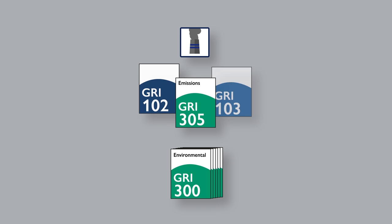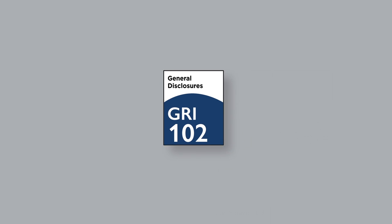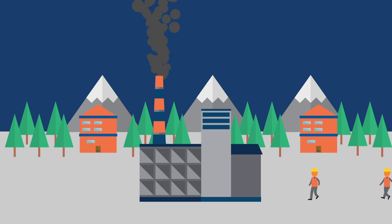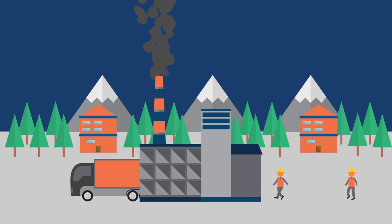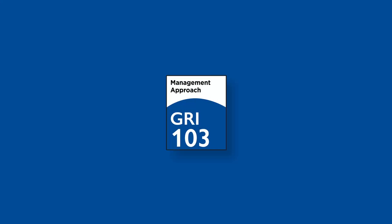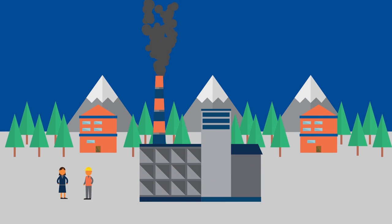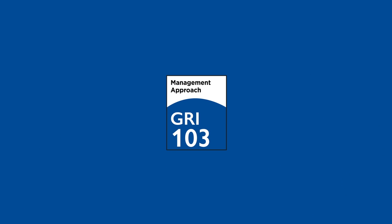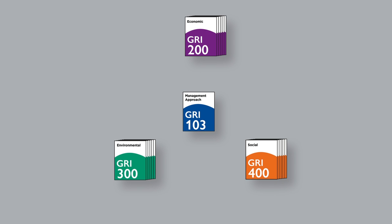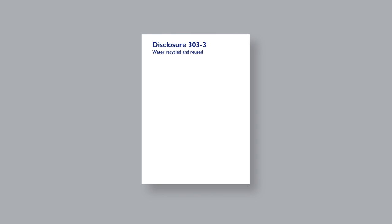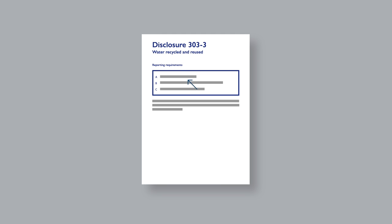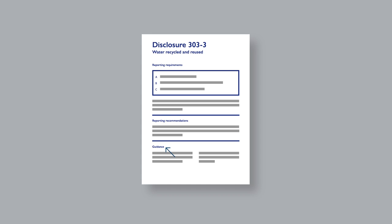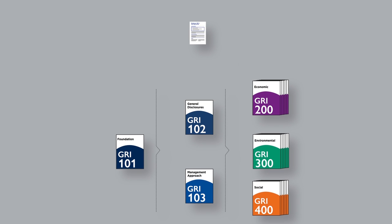You also apply the other two universal standards. GRI 102 General Disclosures is for reporting contextual information about your organization and its reporting practices. You use GRI 103 Management Approach to report how you manage your material topics. You'll use this standard together with each topic-specific standard to explain why the topic is material and where the impacts occur. Each GRI standard has a similar structure with clear distinctions between reporting requirements, recommendations, and guidance. This makes it easier to know what you need to report and how you need to report it.